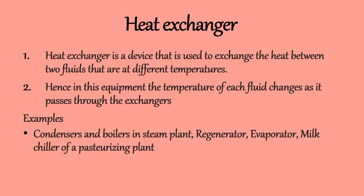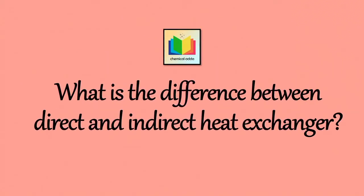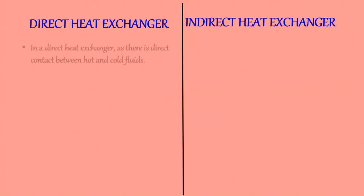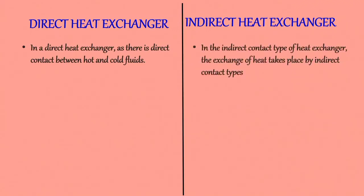Next question: what is the difference between direct and indirect heat exchangers? Direct and indirect heat exchangers are types of heat exchangers classified on the basis of the nature of the heat exchange process. In a direct heat exchanger, there is direct contact between hot and cold fluids, while in an indirect contact type, the exchange of heat takes place by indirect contact.